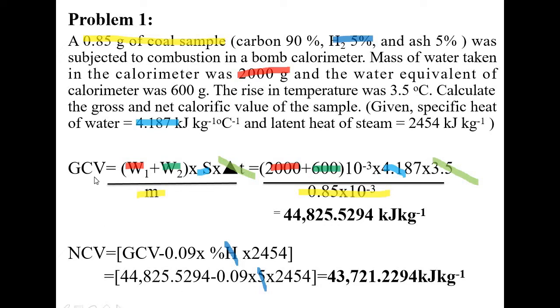Now GCV, write the formula first. This 0.85 gram of coal sample is highlighted in yellow. That means it is the M value. M is the mass of the fuel taken. So M equals 0.85, and since it is given in gram you have to express it in kg because the final answer is to be expressed in kg. That is why it is multiplied by 10 to the power minus 3.